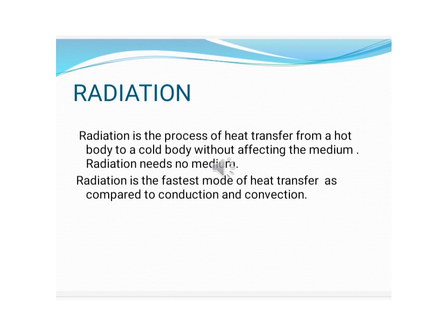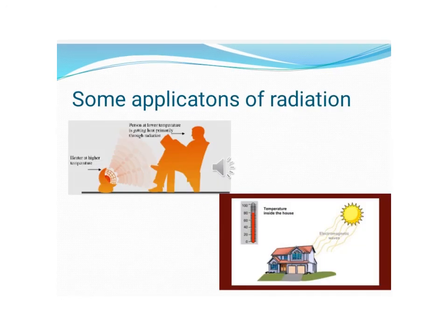Black bodies absorb and emit more heat, while white bodies absorb and emit less. One example: an electric heater has a curved polished metal reflector behind the element. This polished surface reflects heat radiation forward, keeping the person sitting in front of it warm.